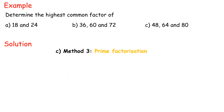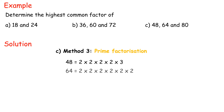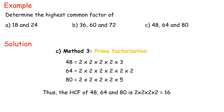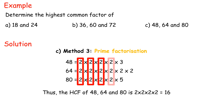For (C), using Method 3 — Prime factorization: find the prime factorization of each number, then multiply all the common prime factors. 48 = 2×2×2×2×3; 64 = 2×2×2×2×2×2; 80 = 2×2×2×5. Thus, the HCF of 48, 64 and 80 is 2×2×2×2 = 16.